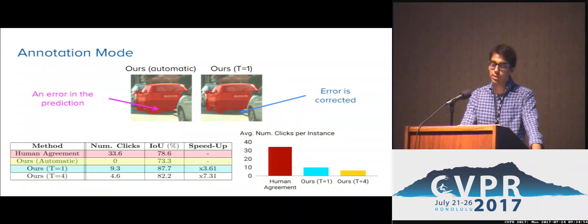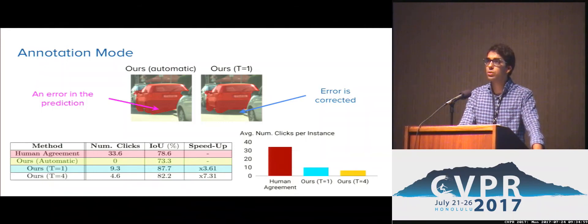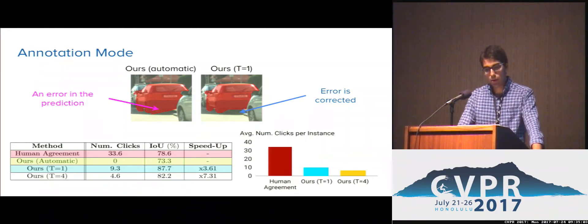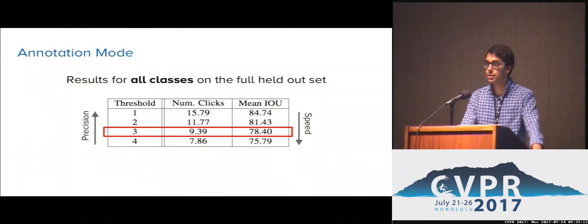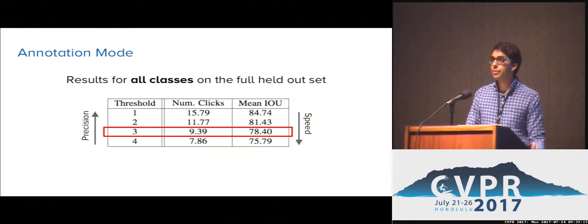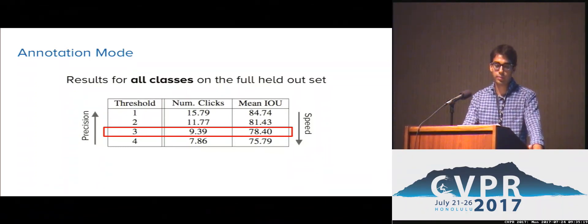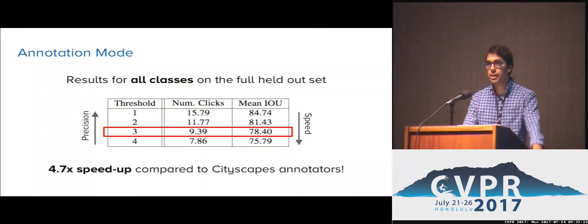With a threshold of one, small deviations are automatically corrected and we simulate the strict annotator. With higher thresholds, we require a reduced number of interactions. We also compared these statistics for all the classes in the full held-out set of the Cityscape's dataset. Using the human agreement on cars as a proxy for all categories, we can see that with a threshold of three, we achieve human-level IOU while providing an almost five times speed-up compared to the original Cityscape's annotations.